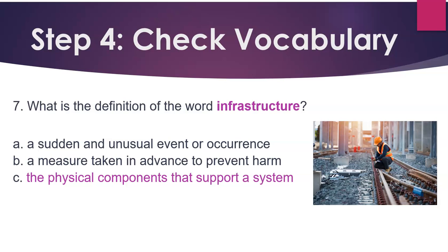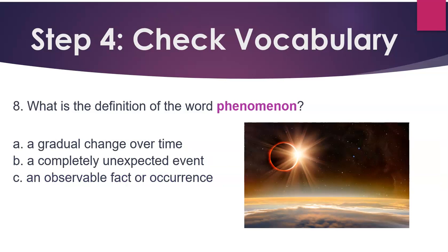Number 8: What is the definition of the word 'phenomenon'? A gradual change over time. A completely unexpected event. An observable fact or occurrence. Answer: An observable fact or occurrence.